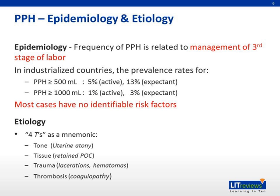In terms of the etiology of PPH, we can remember PPH by the mnemonic four Ts. Most common of all is tone, where uterine atony is the most common cause of PPH. Tissue — for example, retained products of conception, such as a retained placenta — can also be a cause. The third cause can be due to any lacerations in the uterus, cervix, or vaginal canal, or hematomas following episiotomy repairs. The last cause can be due to thrombosis — sometimes due to DIC or coagulopathy issues.